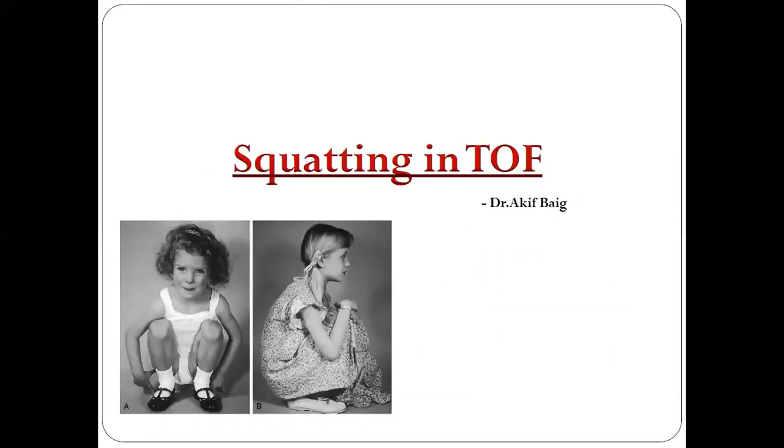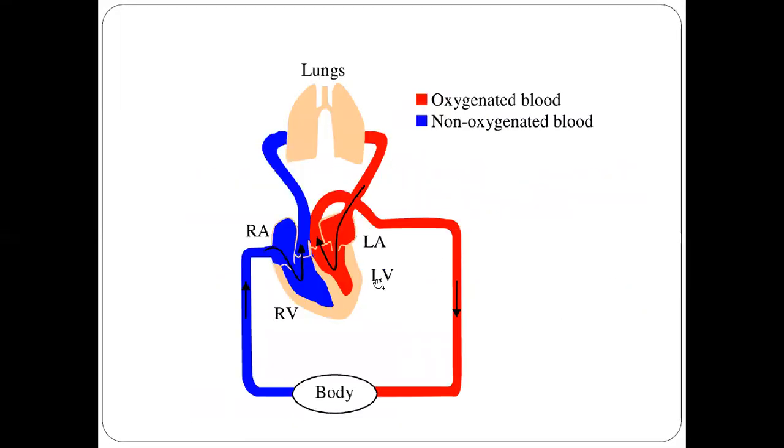As we all know, in Tetralogy of Fallot there is a thing called cyanotic spells. These cyanotic spells occur because of increased right-to-left shunt. The right ventricle blood goes from the ventricular septal defect to the left ventricle and there is mixing of this blood. When the right ventricle blood mixes with the left ventricle blood, there is deoxygenated blood with oxygenated blood. This mixture leads to desaturation and cyanosis.